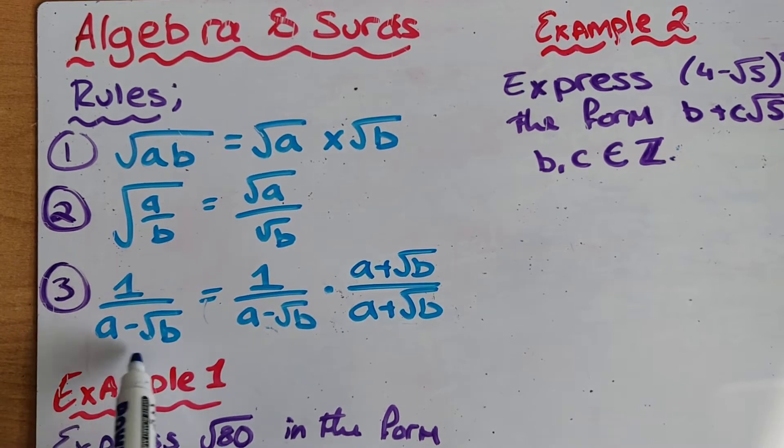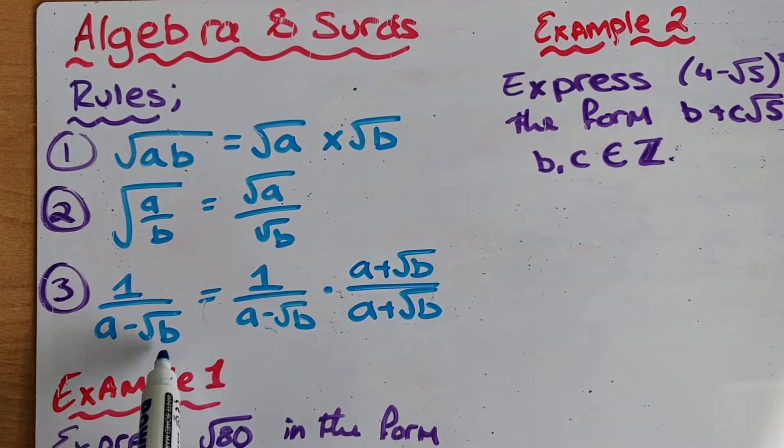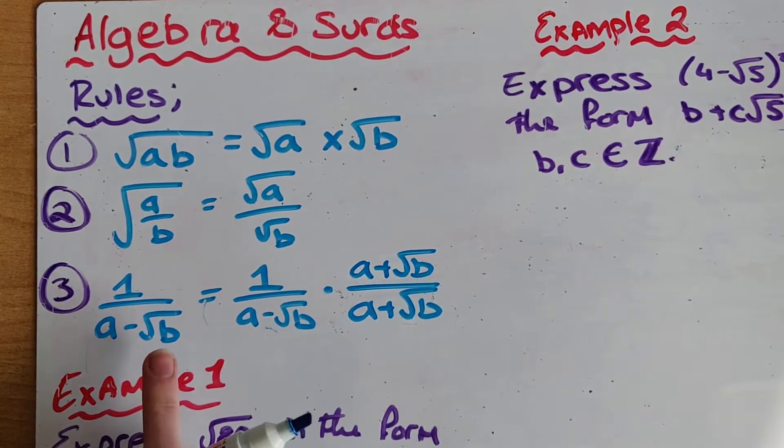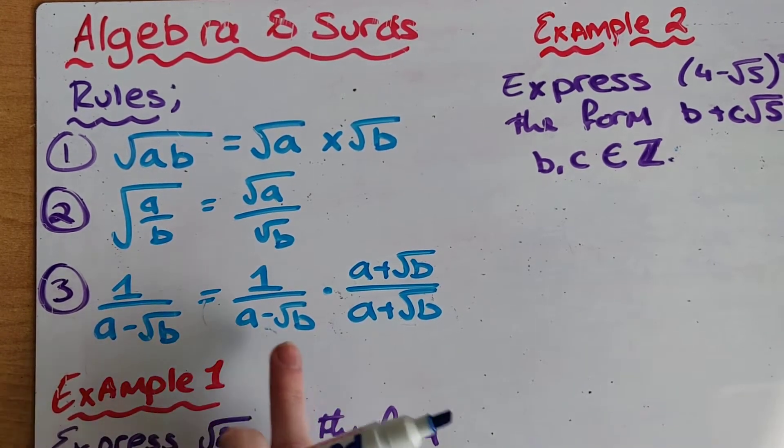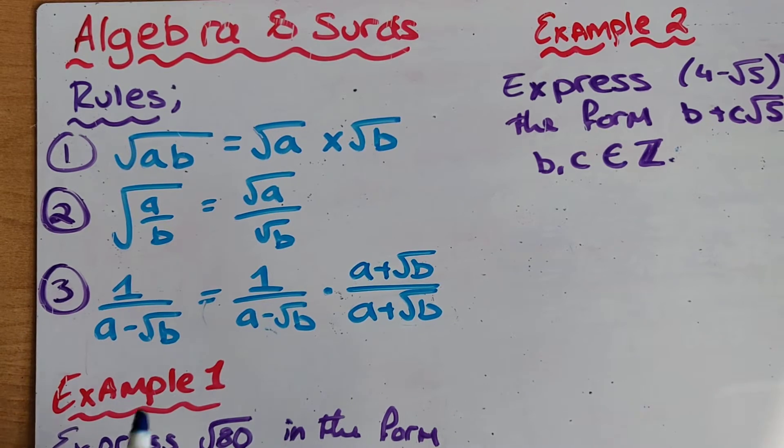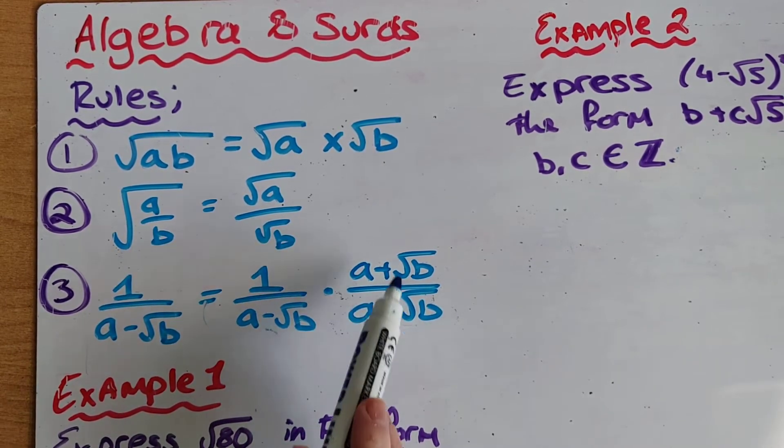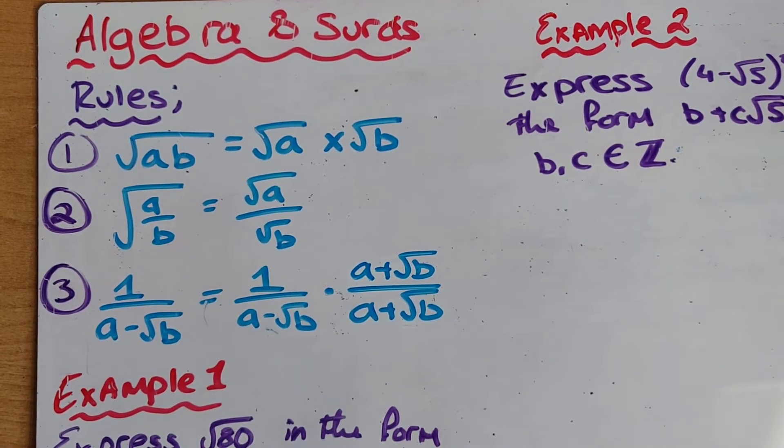Our third rule is if we have a fraction involving a surd where a surd is part of the denominator, part of the bottom of the fraction, we don't like to use that going forward so we have a rule to rationalize the surd. So we take the bottom, we change the sign in between and we multiply top and bottom by the rational of the root.